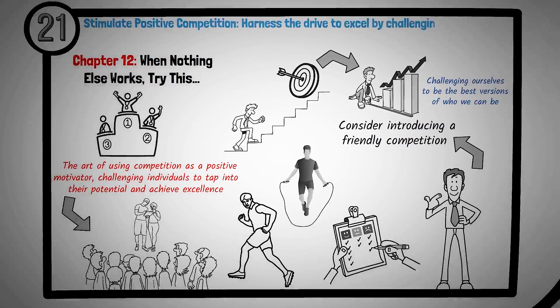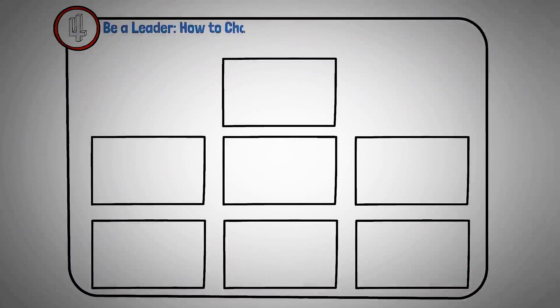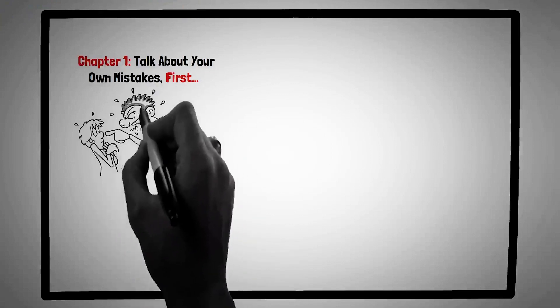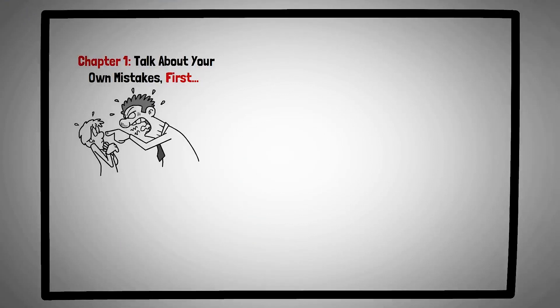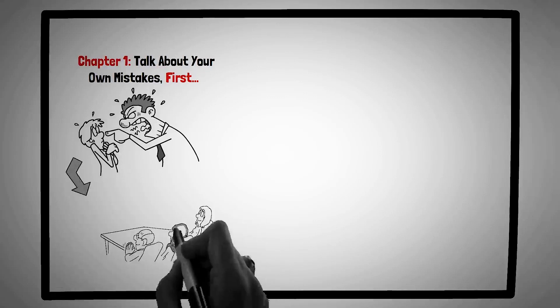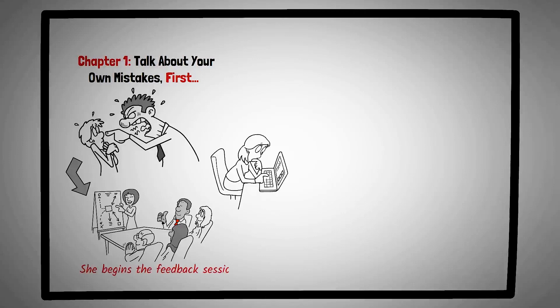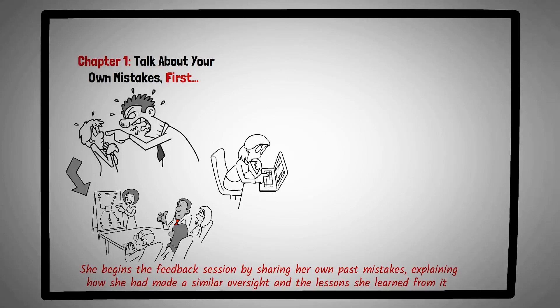Part four: be a leader. How to change people without giving offense or arousing resentment. Chapter one, talk about your own mistakes first. Feedback, especially when it pertains to mistakes, can be a sensitive topic. This chapter offers a nuanced approach to this challenge, emphasizing the value of humility and self-awareness in making critiques more receptive. Imagine Sarah, a senior architect at a design firm. She's reviewing a project draft by a junior architect, Jake, and notices a few oversights. Instead of diving straight into corrections, Sarah recalls a similar project she worked on early in her career. She begins the feedback session by sharing her own past mistakes, explaining how she had made a similar oversight, and the lessons she learned from it. By doing so, she creates an atmosphere of understanding and mentorship. When she then points out Jake's errors, he doesn't feel singled out or defensive. Instead, he's eager to learn and improve, seeing the feedback as a valuable learning opportunity rather than criticism.